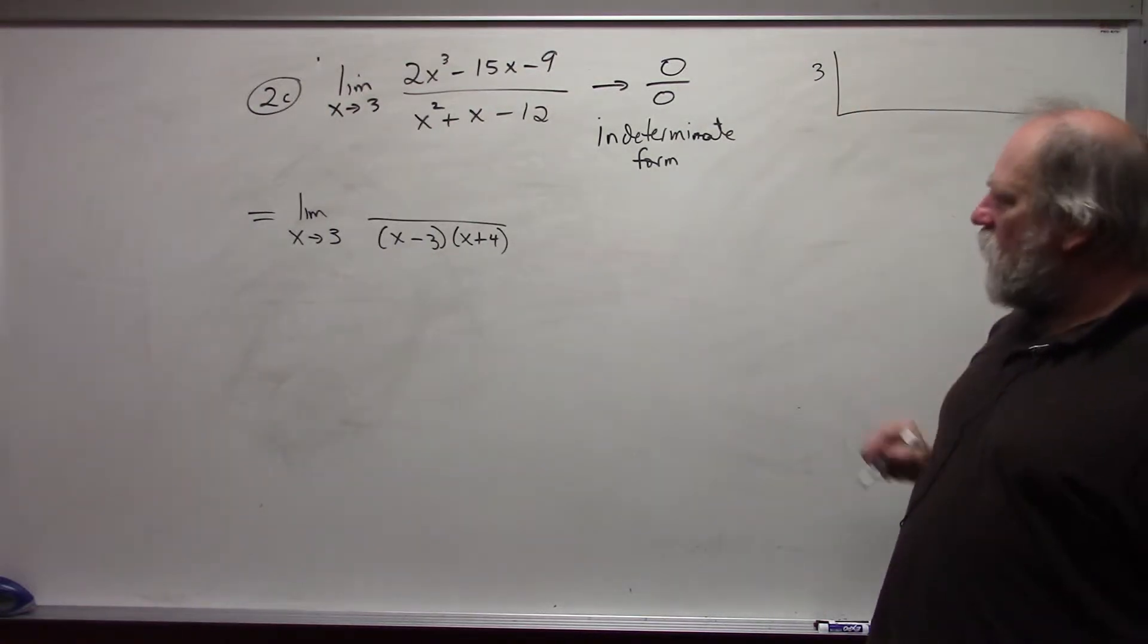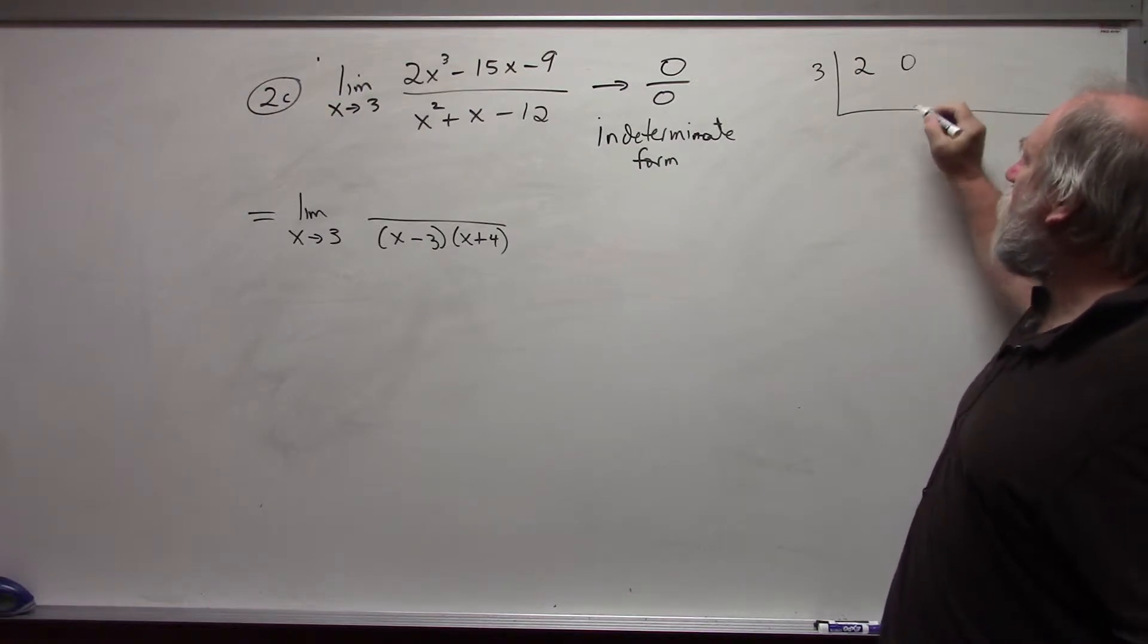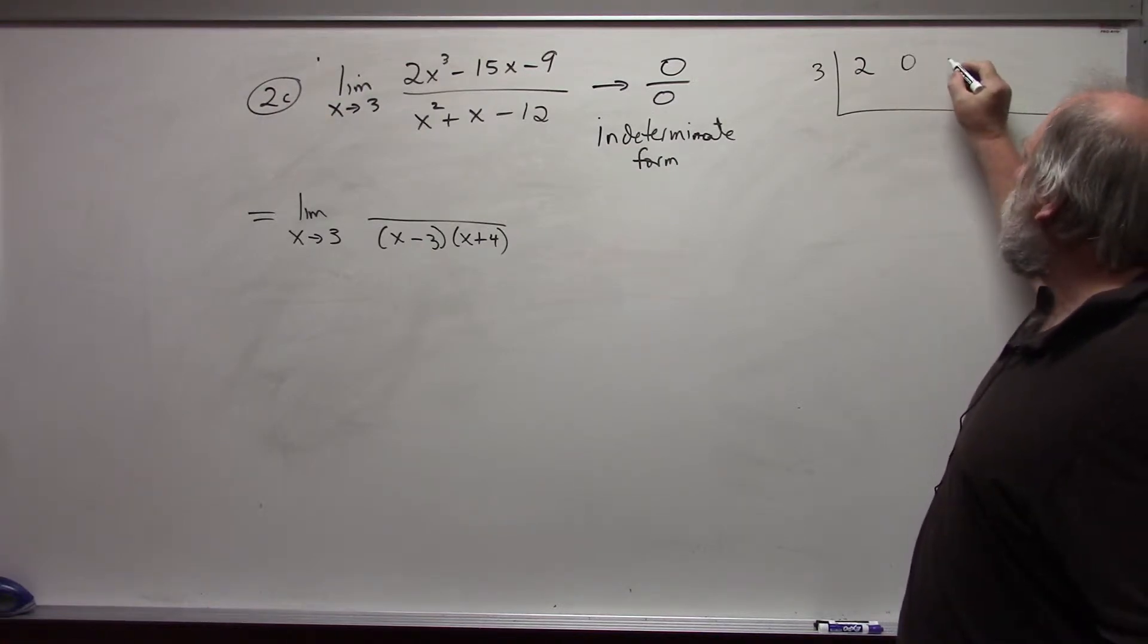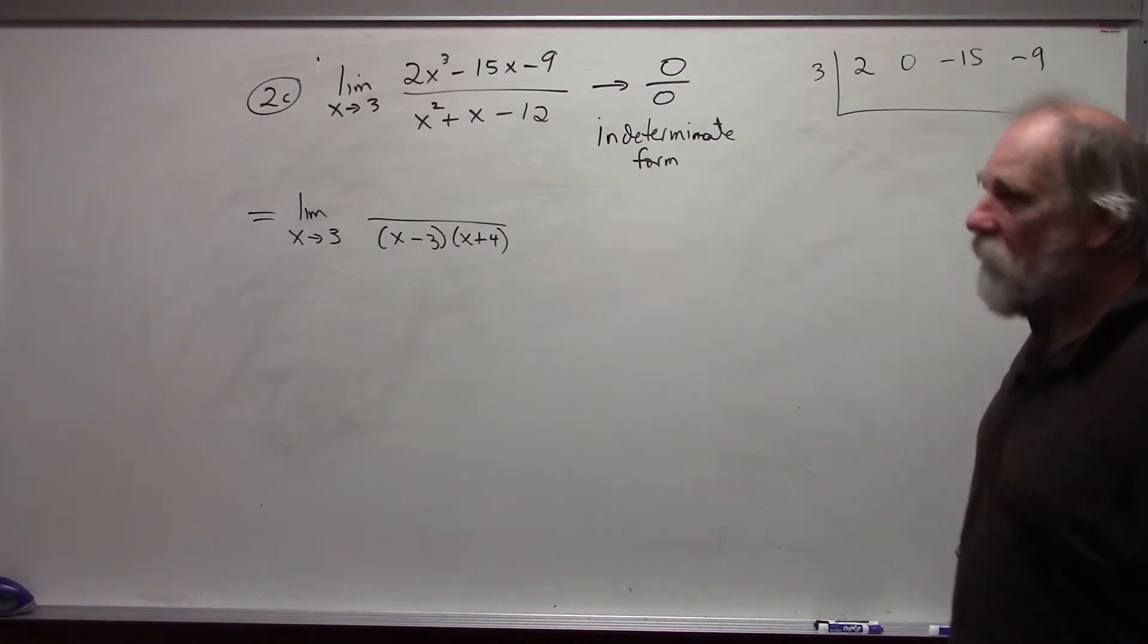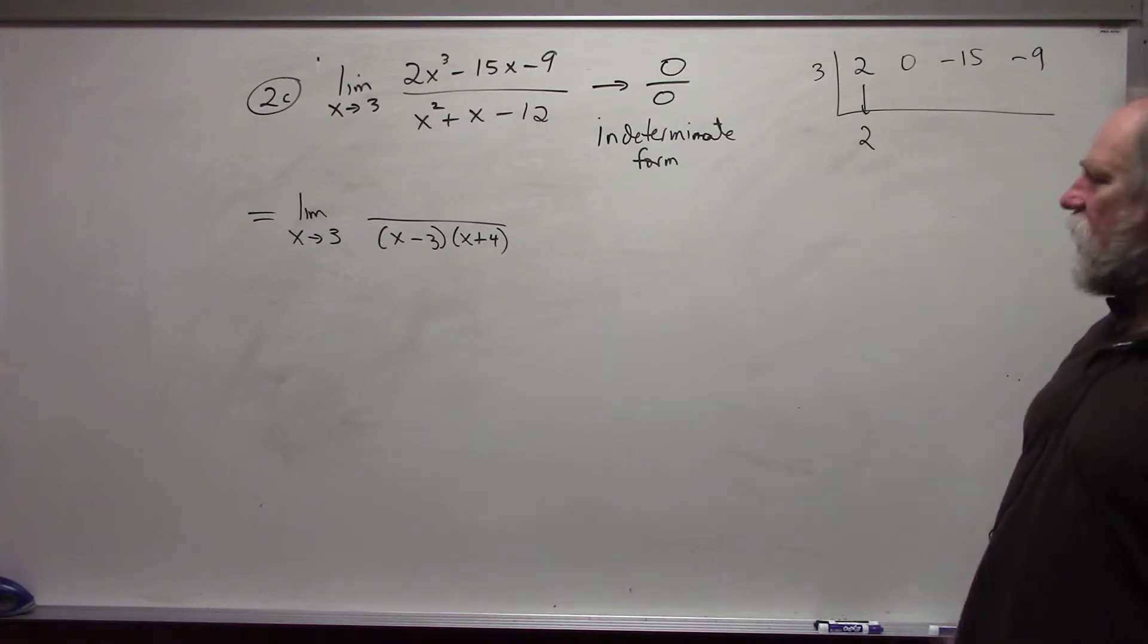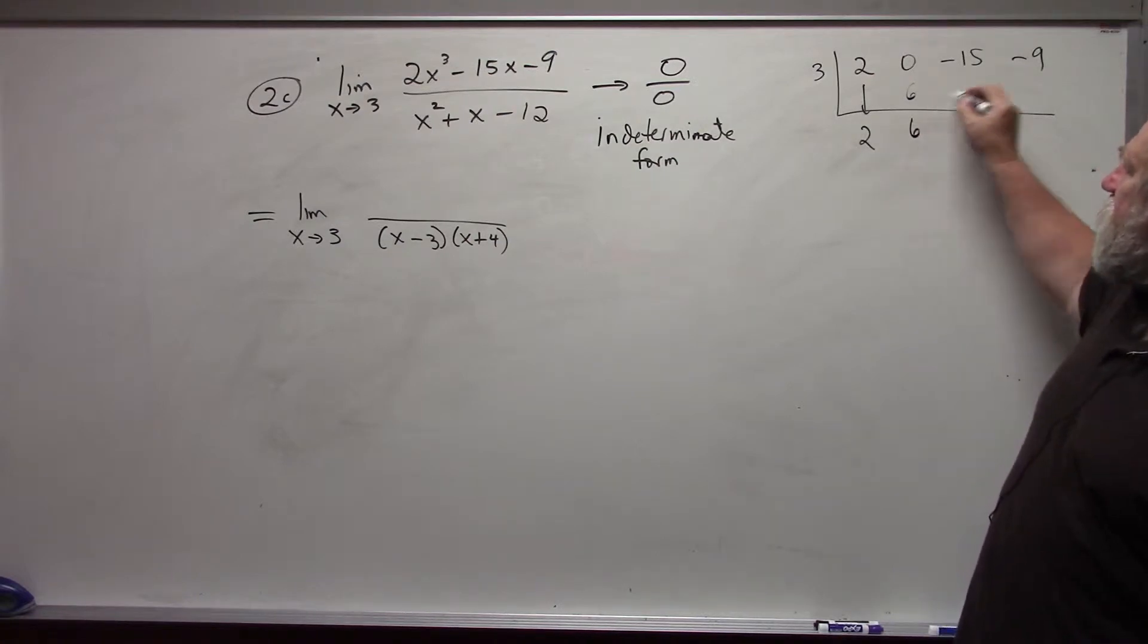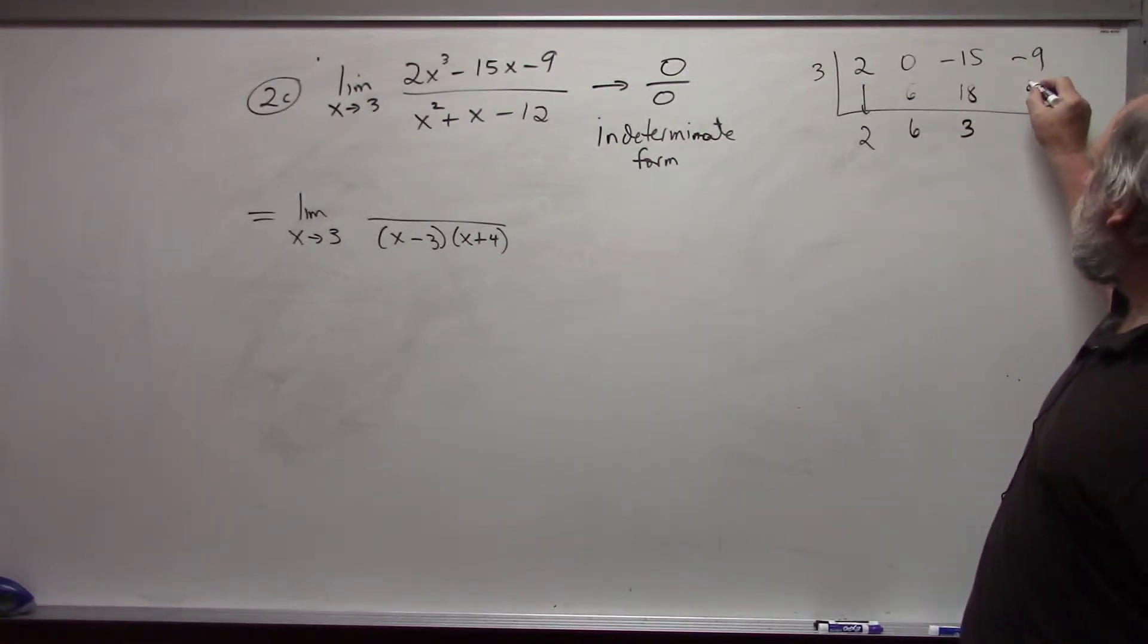We will put the 3 on the outside and the coefficients on the inside: 2, 0. Make sure you put in that 0. Negative 15, negative 9. The first term, that leading coefficient comes down. After that we multiply and then add. 3 times 2 is 6. 3 times 3 is 9. The end result being 0.